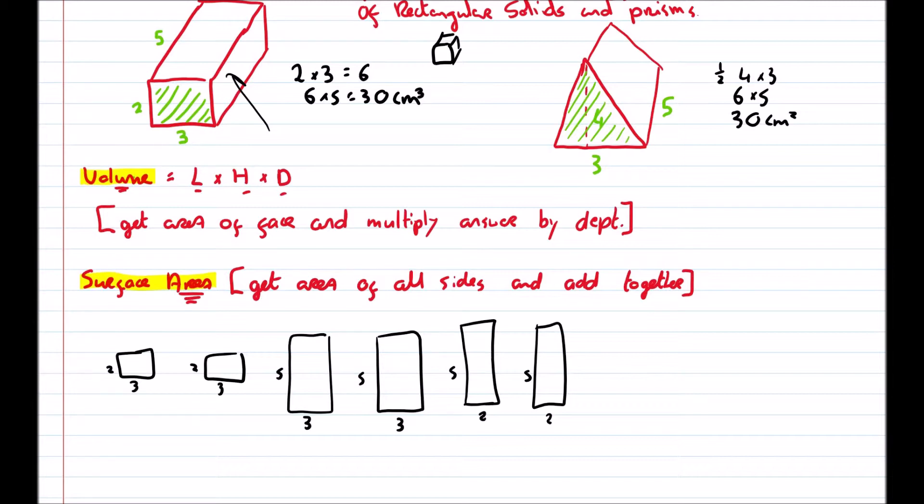We get the area of them all. So to get the area, it's base by height. So 2 by 3, 6, 6, 15, 15, 10, and 10. And then we add them up. So 30, 40, 50, 62. That's when I add them up. 62 centimeters squared, because it's the surface area.